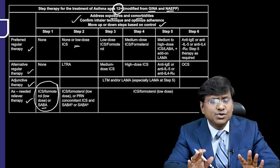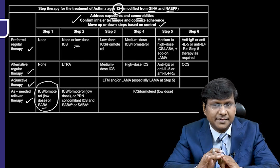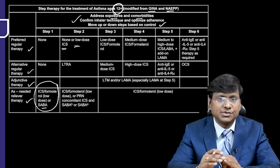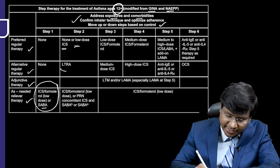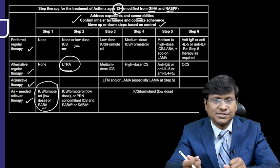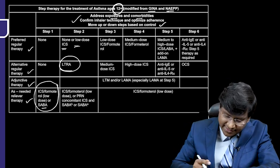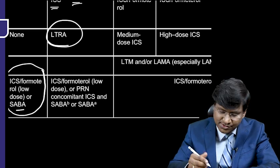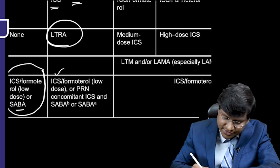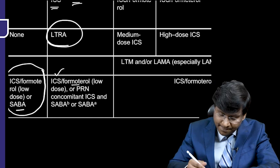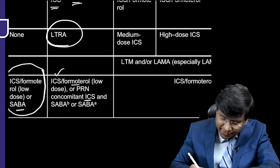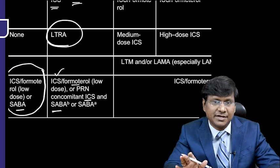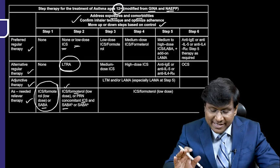In Step 2, low-dose inhaled corticosteroids are the preferred regular therapy. The alternative therapy is a leukotriene receptor antagonist. The reliever therapy includes inhaled corticosteroids or formoterol during exacerbations, or concomitant inhaled corticosteroids and short-acting beta agonist.